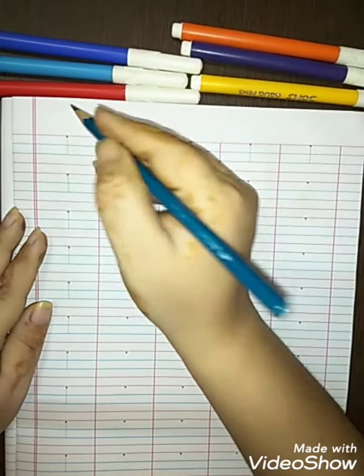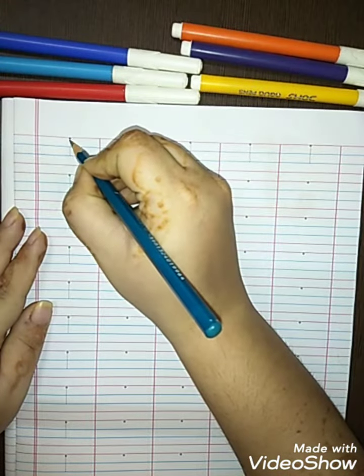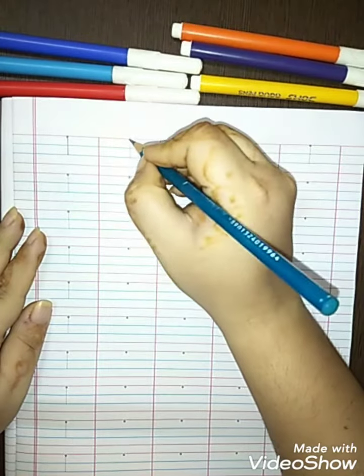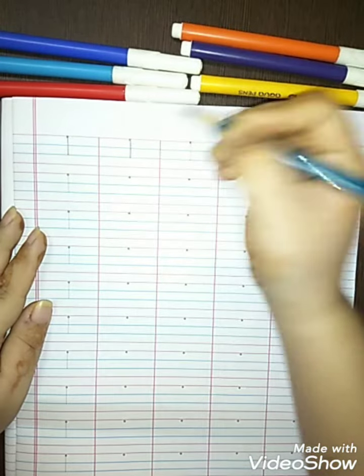So first you will trace on dot. Make a standing line, I. Make a standing line, I.